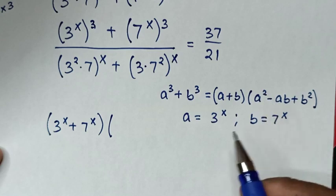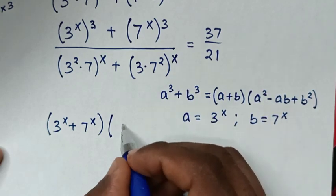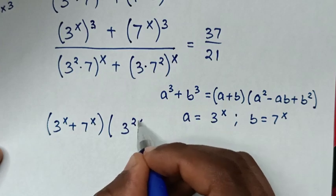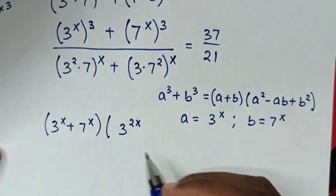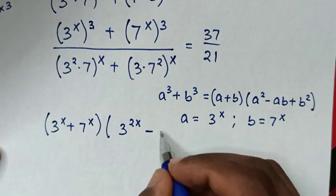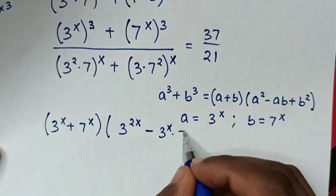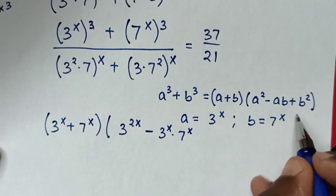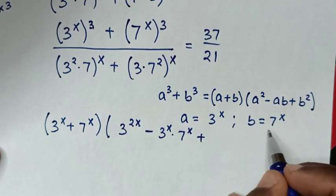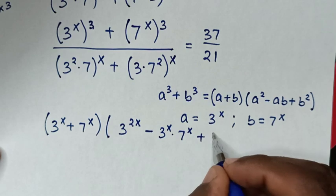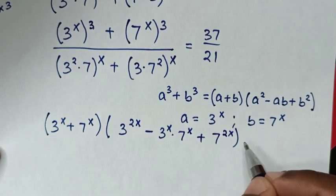Then a squared is (3^x)^2, which is 3^(2x). Then negative AB, it would be negative: A is 3^x times B is 7^x. Then plus B squared, it would be plus (7^x)^2, which is 7^(2x). Then bracket.